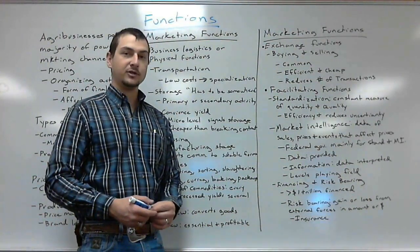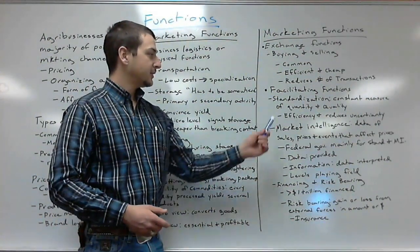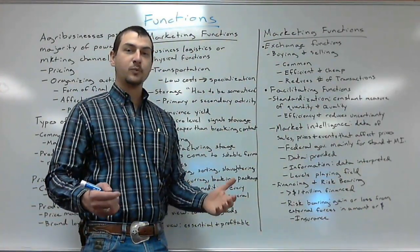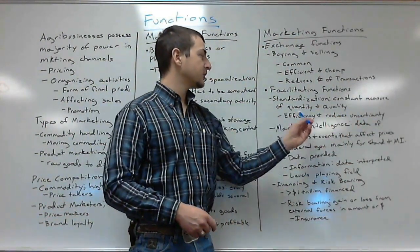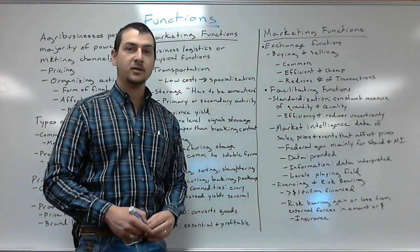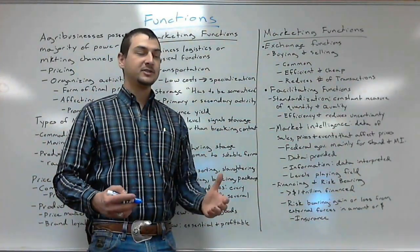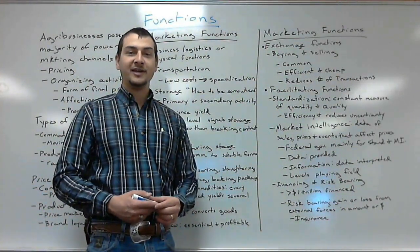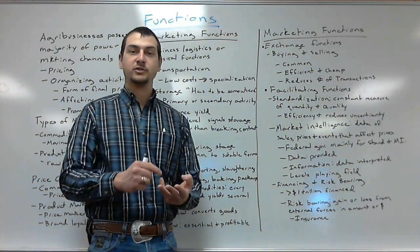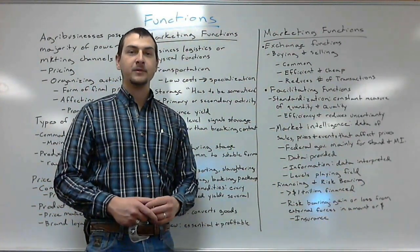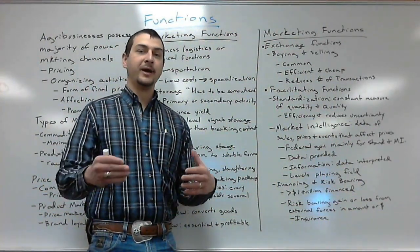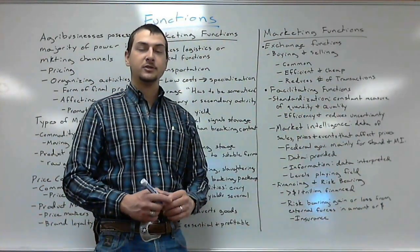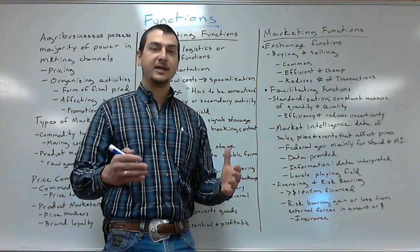Next we have the facilitating functions. The facilitating functions consist of items such as standardization and market intelligence. Standardization is the process of making sure that we have constant measures of quantity and quality for our agricultural commodities. This standardization is seen when you walk into a store and pick up a slab of beef rated prime, choice, or select. Or it's seen when talking about one bushel of wheat — that's a standardized quantity.